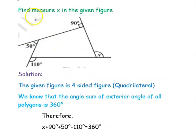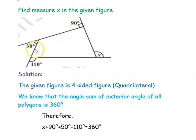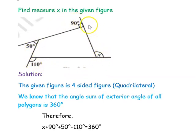The first question is: find measure x in the given figure. The given figure has four sides — 1, 2, 3, 4 — so it is a quadrilateral. The given angles are 90 degrees, 50 degrees, 110 degrees, and x. If you analyze the figure, all the given angles are exterior angles, and we also want to find the exterior angle x.